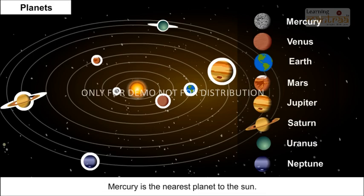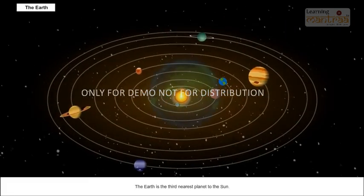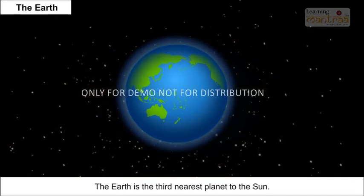Mercury is the nearest planet to the Sun. The Earth is the third nearest planet to the Sun.